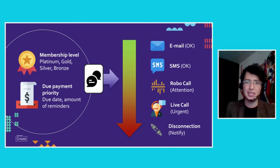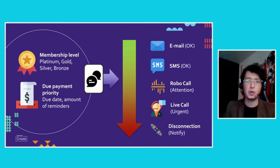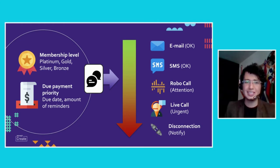If the user still didn't pay, the next step would be a robocall — an automatic call where the user picks up the phone but there is no person on the other side, only a recording reminding them to pay their services. If this didn't work, the next contact would be a live call, this time with a real person on the phone.